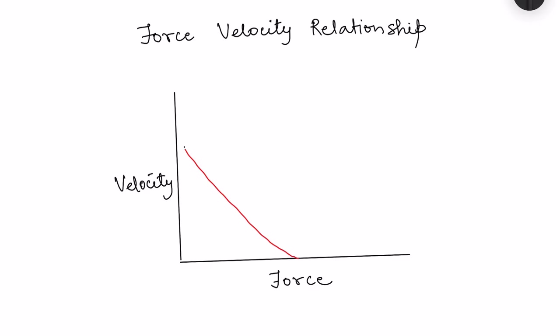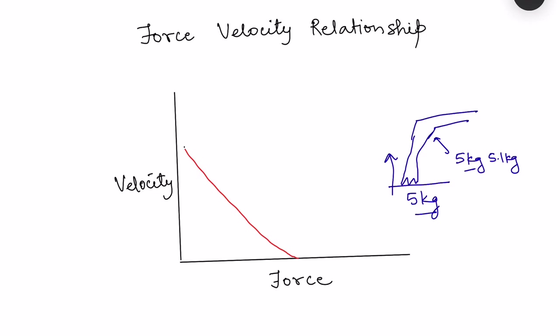Whenever we want to lift a load, our muscles should be able to generate that much amount of force. Say suppose there is a load of 5 kg which I want to lift up — in that case, my hand should be able to generate a tension or strength of 5 kg, and a little bit more, say 5.1 kg, and then only it will be able to lift the load up. Once it lifts the load, the muscle will start shortening, so there will be bending of the arm.